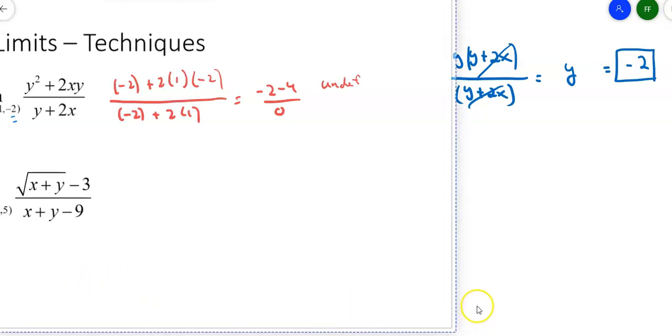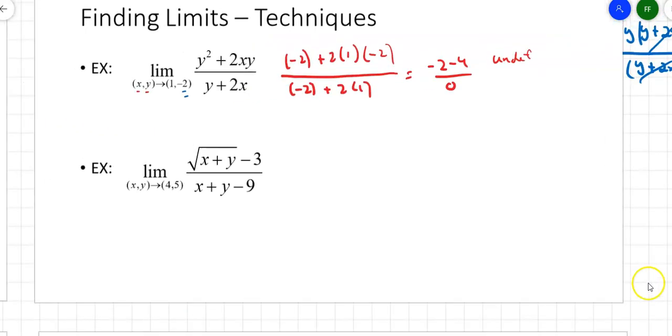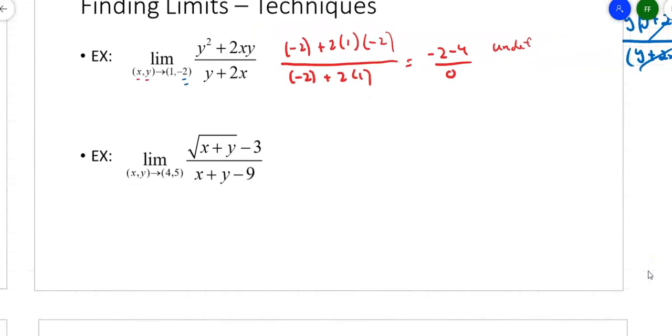The next one down here, what do we do with the square root of x plus y minus 3? First thing is you put in the 4 and the 5. You can see right away when you put 4 for x and 5 for y on the bottom, you're going to get something undefined.